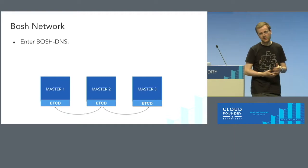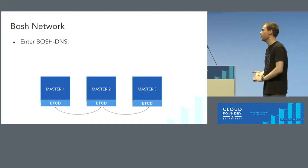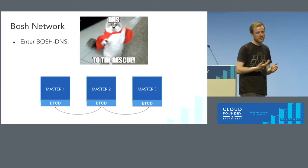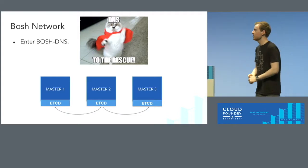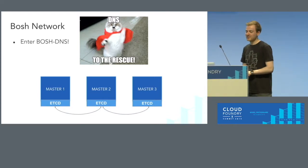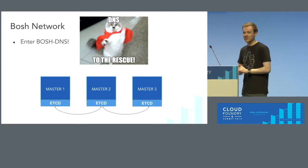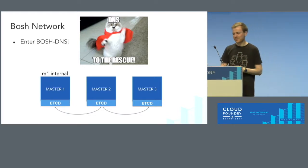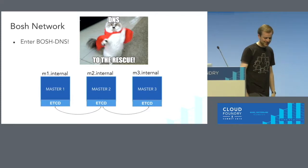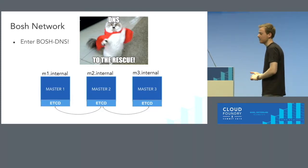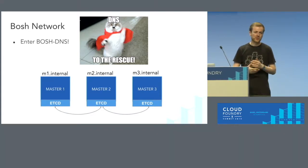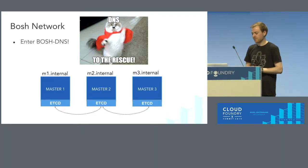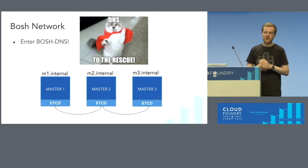This is where BOSH DNS comes in — something that arrived about a year ago. Very simply, it allows you to assign DNS names to your virtual machines instead of using IP addresses directly. So you create names like m1.internal, m2, and m3. Any time you reference those masters, you use the names instead. Now you don't need to worry about IP addresses, and the master will be able to rejoin the cluster as soon as BOSH brings it back up.